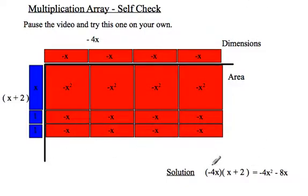Checking the shortcut: negative 4x times x is negative 4x squared, and negative 4x times positive 2 is negative 8x.